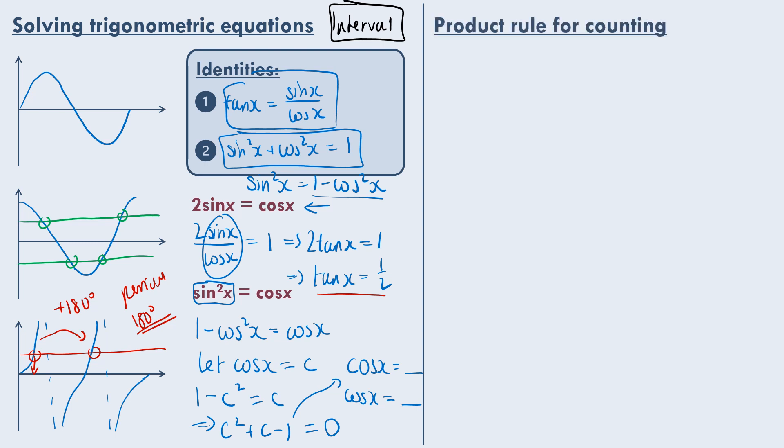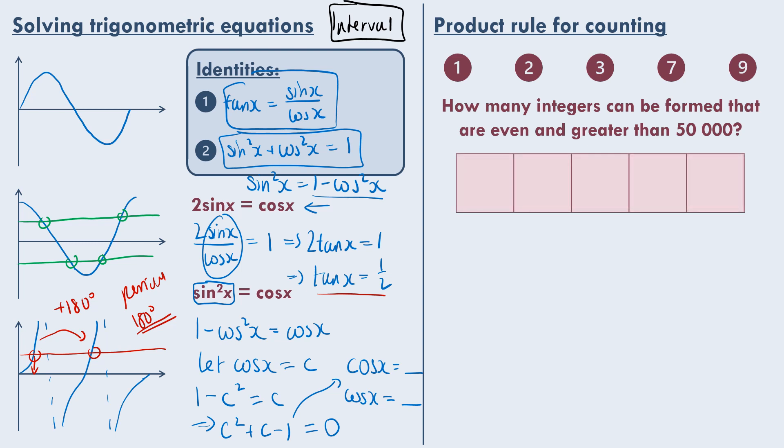Finally the product rule for counting. They will usually ask this question in the form of giving you some numbers and asking you a question like how many integers can be formed that are even and greater than 50,000. So in this case we know that because we have five integers and we need to form an integer that is greater than 50,000, then we need a five digit number. Because we know it's even then we have to put two in that last slot, and because we have to be greater than 50,000 we can only have seven or nine in this first spot. And then any of the other numbers can go in the middle three.